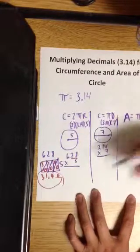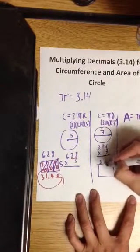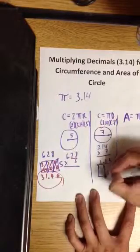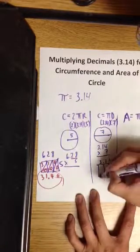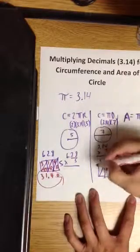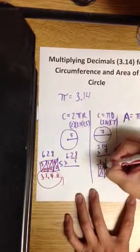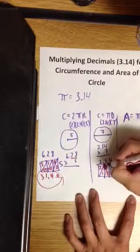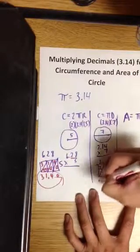Again, I prefer lattice. So, let me separate the digits. Let me draw the diagonals. And let's now fill in the blank. 3 times 7 is 21. 1 times 7 is 07. 7 times 4 is 28. 8, 9, 1, 2.